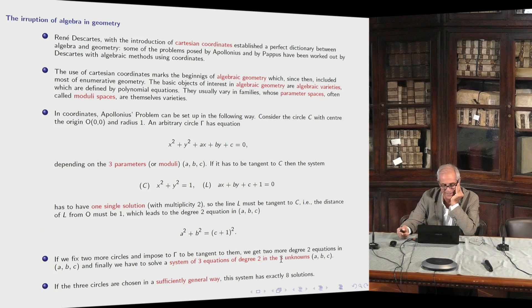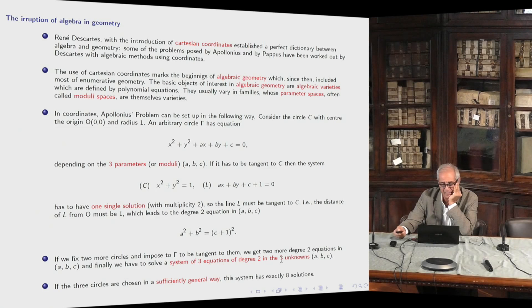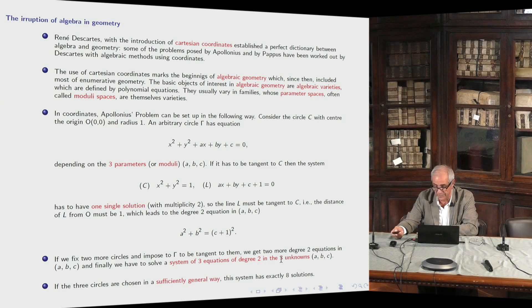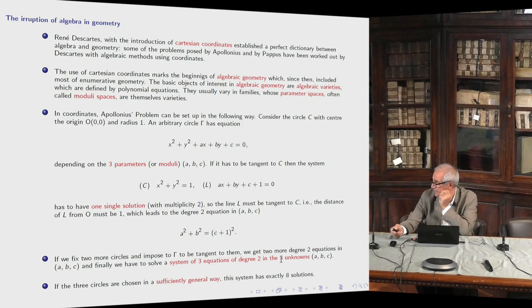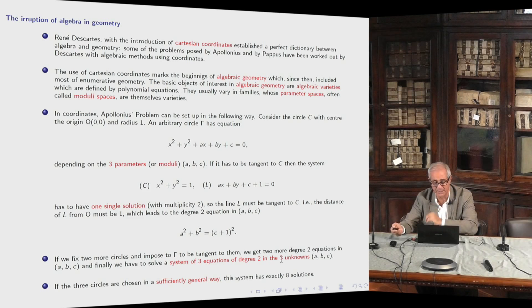As we know, Descartes introduced Cartesian coordinates in the 17th century, and in this way he translated geometric problems into algebraic problems and vice versa. The use of Cartesian coordinates basically marks the beginning of algebraic geometry and of enumerative geometry as a part of algebraic geometry. How can we set up Apollonius' problem in this way? You take a general circle; everybody knows from high school that the equation is x² + y² + ax + by + c = 0.